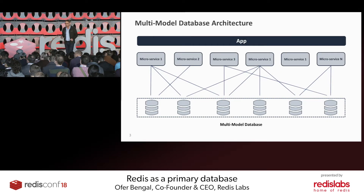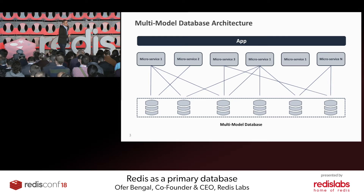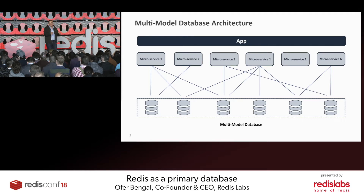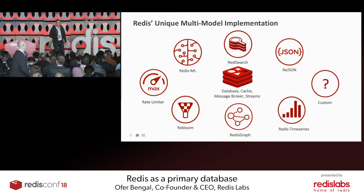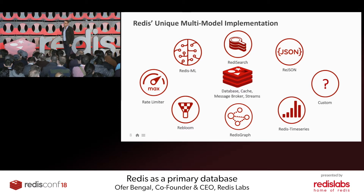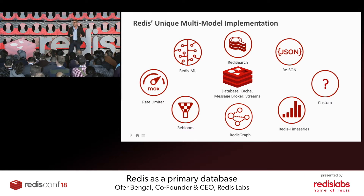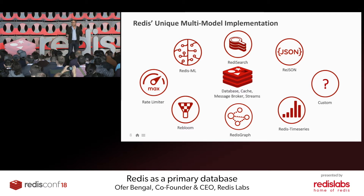Another modern approach is to use what we call a multi-model database architecture, by which the microservices communicate with a single database which has all those separate functionalities of multiple types of databases. This makes things much simpler. In the case of Redis, we implemented the multi-model functionality with a novel concept called Redis modules. We have a core part of the database and then an API which enables anyone to add any C, C++, Python, or Go library to the database and make it an integral part of the database.